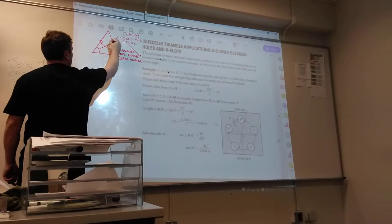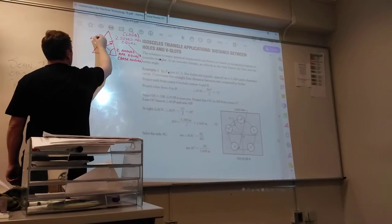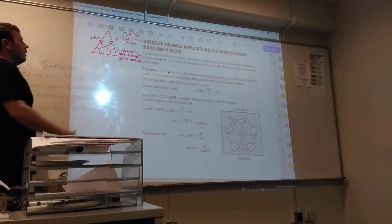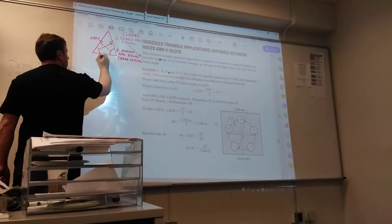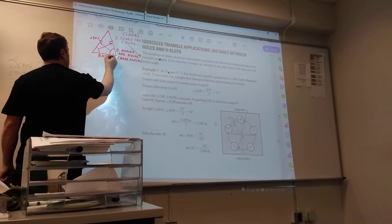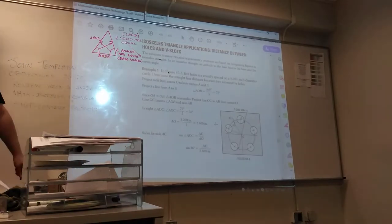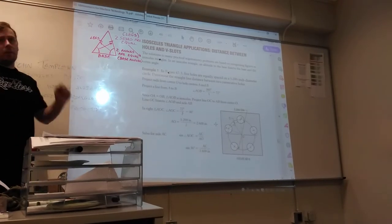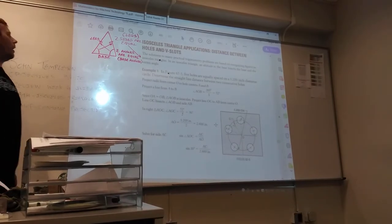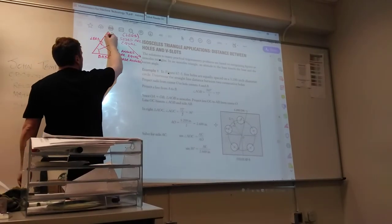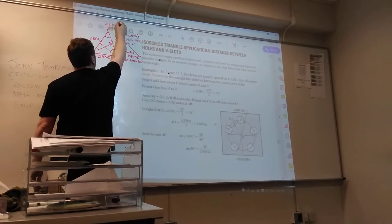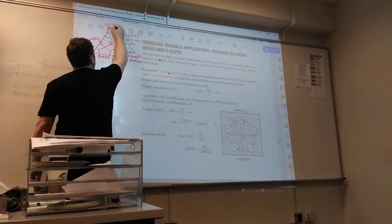So here and here are the legs. The side that is not equal is called the base. So the two angles that touch the base are your base angles, and that leaves you one angle at the top, and we call that the vertex angle.